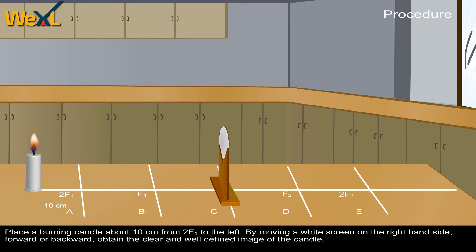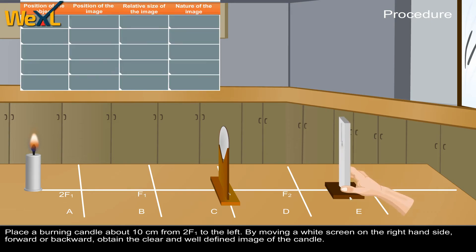Place a burning candle about 10 cm from 2F1 to the left. By moving a white screen on the right-hand side forward or backward, obtain the clear and well-defined image of the candle.